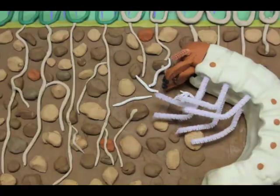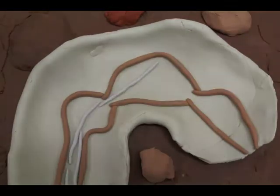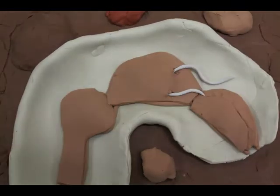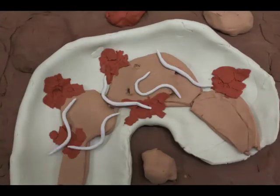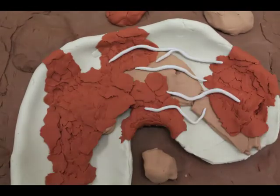Nematodes swarm into its mouth, break through the wall of its gut, and enter the body cavity. There, they vomit up their bacteria, which release a flood of toxic chemicals and spread throughout the grub, killing it.